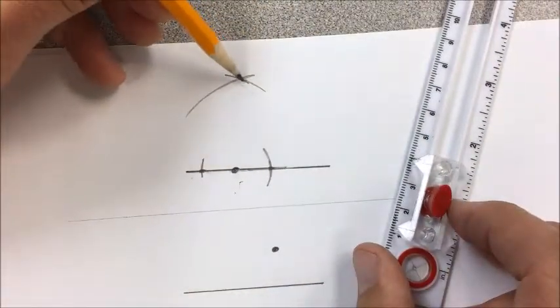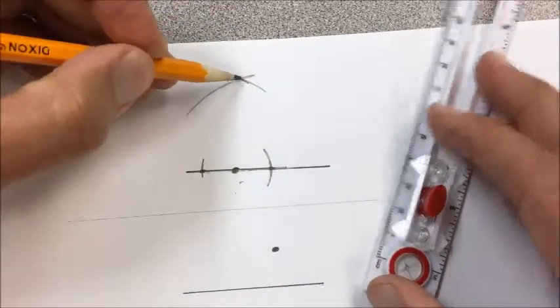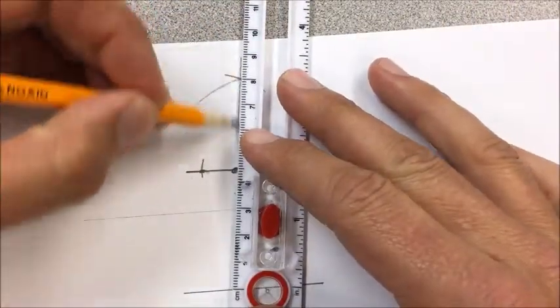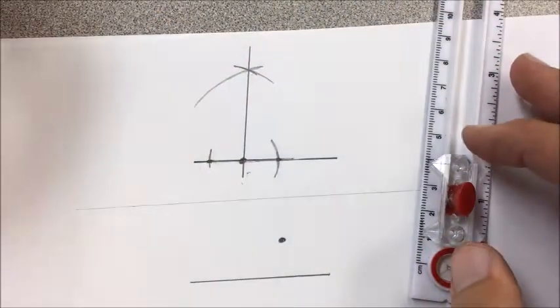And so notice what I did was I arced from here, arc from here same length. So that means that these are the same length from there. That should be perpendicular.